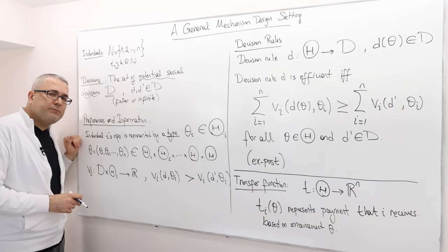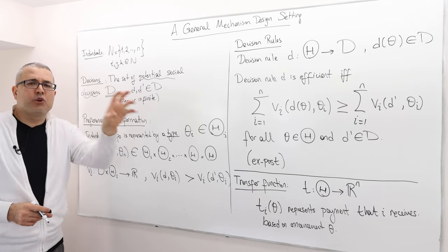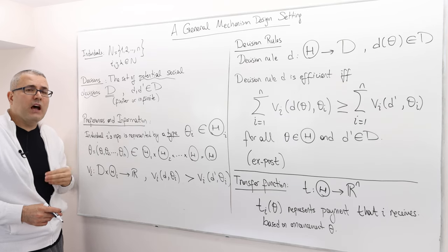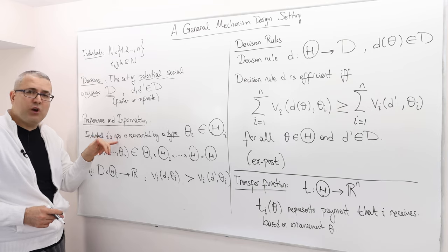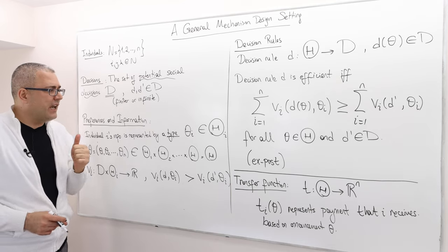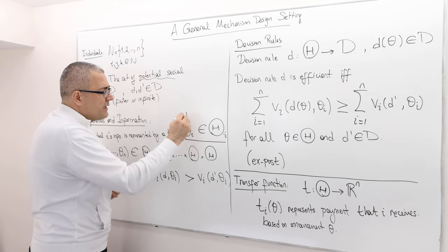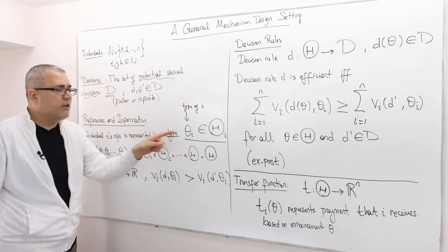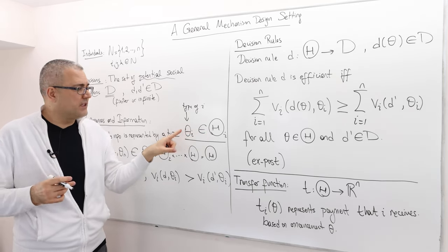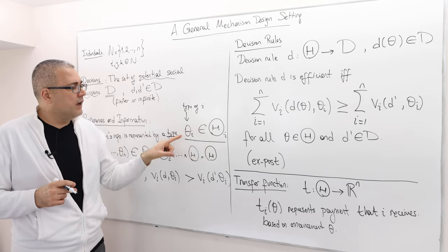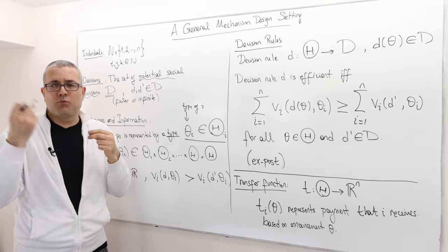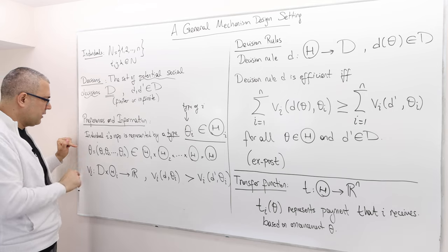Preferences and information. Remember, the input of our mechanisms are always private information. We assume that individuals do have private information. An individual i's private information is represented by his type, as in the case of Bayesian games. The type of individual i is denoted by theta i, where theta i is an element of capital Theta i — the set of all types of player i.